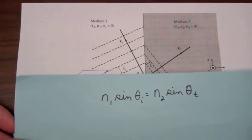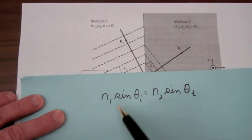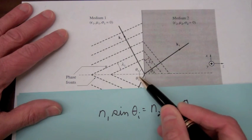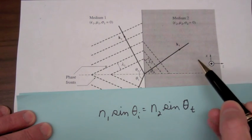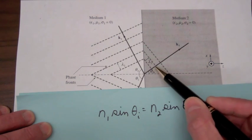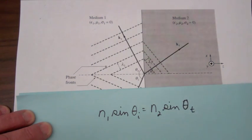that the refractive index in medium one times the sine of the incident angle is equal to the refractive index in medium two times the sine of the transmitted angle.